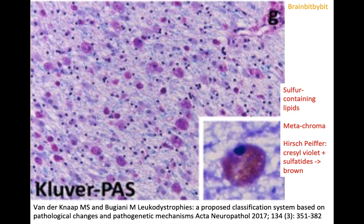If you have slices of affected white matter in patients with metachromatic leukodystrophy examined under the microscope, after staining them with cresyl violet, the sulfatides that have accumulated in the cells have this reaction, and this gives a colour change — the metachromasia — from violet to brown. So that's the reason why it's named metachromatic leukodystrophy.